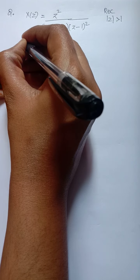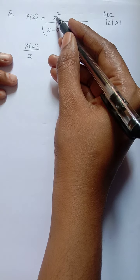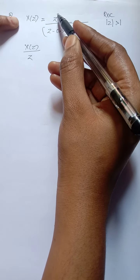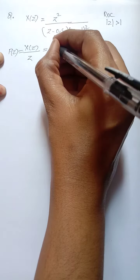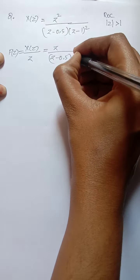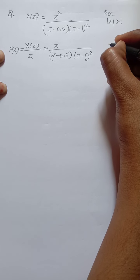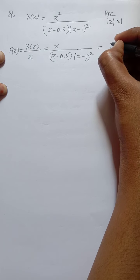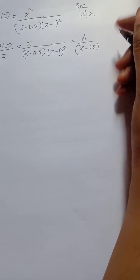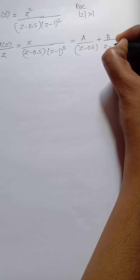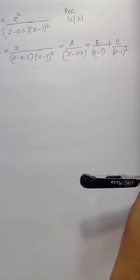For the next problem, the first step is to divide X(z) by z, but first check if it is in positive powers — if yes, proceed directly. Here it is in positive powers, so we write X(z)/z = z divided by (z − 0.5)(z − 1)². We apply partial fractions: A/(z − 0.5) + B/(z − 1) + C/(z − 1)².